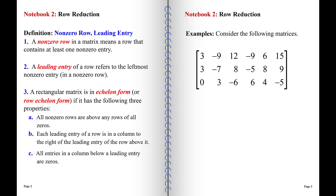A matrix is in echelon form — officially row echelon form — if it has all three of the following properties. First, all non-zero rows are above any rows that are all zeros, which means zero rows need to be at the bottom. Second, each leading entry of a row is in a column to the right of the leading entry in the row above it, if there is a row above it.